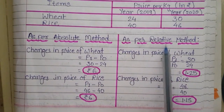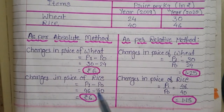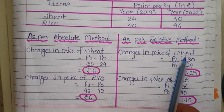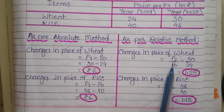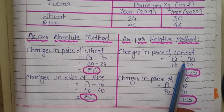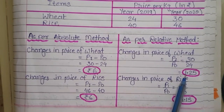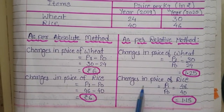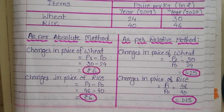As per the relative method, which is the method of ratio, we take the ratio of prices. Changes in price of wheat = P1 upon P0 = 30 upon 24 = 1.25. Changes in price of rice = P1 upon P0 = 46 upon 40 = 1.15. So the calculation in both methods is different. In both methods, we will use only the relative method because the absolute method is not used in index number.